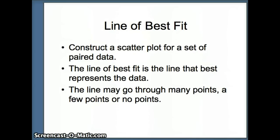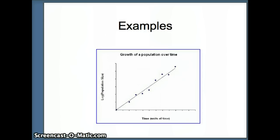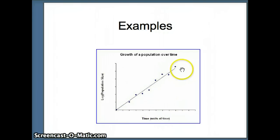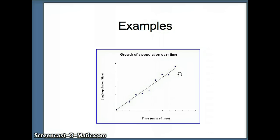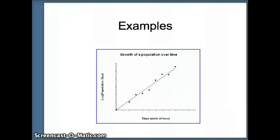That line could go through many points, it could go through a few points, or it could go through no points. Here's an example. We have x values here, y values here, and here are all of our points. From this perspective, it looks like the line doesn't really go through any of the points. We would expect the correlation here would be fairly close to 1, as the points are tightly packed along that regression equation.